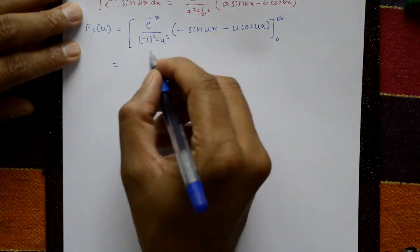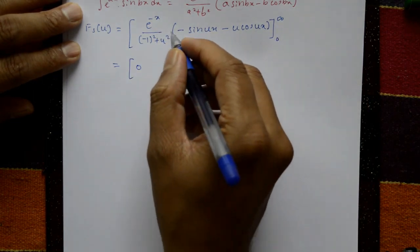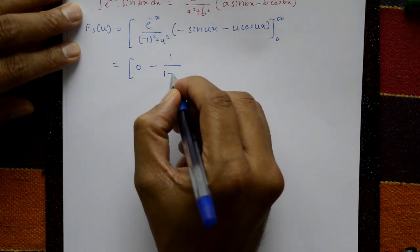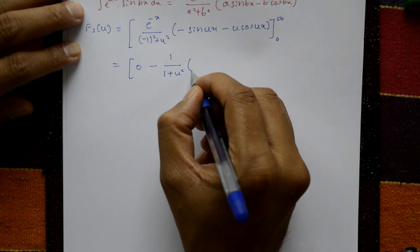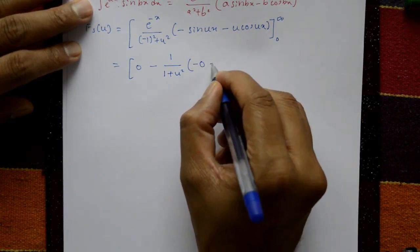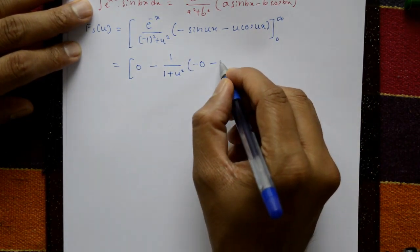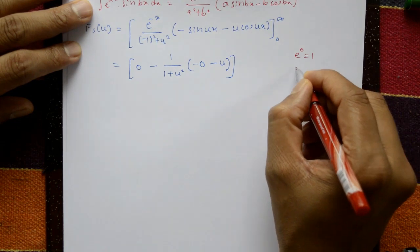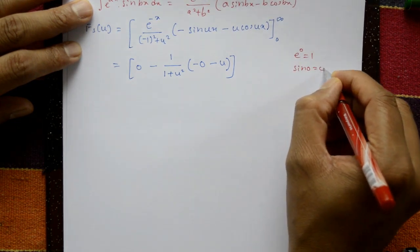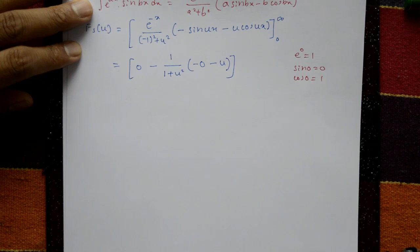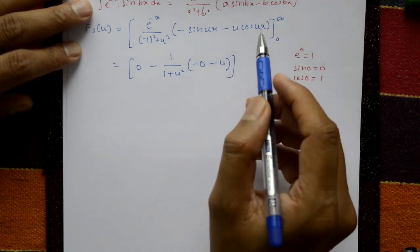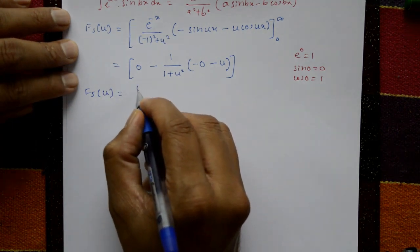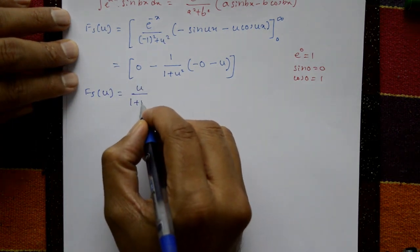Applying the limits: at the upper limit, e^(-∞) = 0, so that term vanishes. At the lower limit x=0: e^0 = 1, sin(0) = 0, cos(0) = 1. So we get −(1/(1+u²))·(0 − u·1) = u/(1+u²). Therefore fs(u) = u/(1+u²).